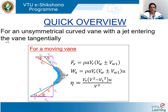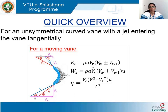First let us quickly glance through the concepts that will be used in this lecture. In the case of an unsymmetrical curved vane with a jet entering the vane tangentially and if the vane is moving with velocity u in a direction different from that of the velocity of the jet v, we need to draw velocity triangles to find the relative velocity. In these expressions: rho is the mass density of the fluid, a is the cross-sectional area of the jet, vr is the relative velocity with which the jet is striking the vane, vw and vw1 are the whirl velocities at inlet and outlet, v and v1 are the absolute velocities at inlet and outlet, and u is the velocity of the vane.